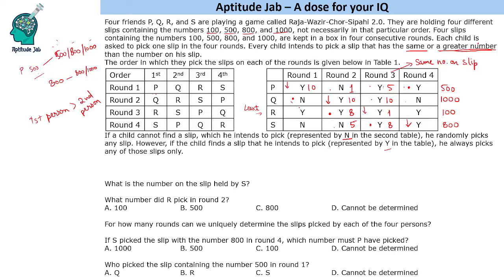Looking at rounds 1 and 4: in round 4, Q does not get their desired number and can pick anything — 500, 800, or 100. R can get anything of their choice since R is 100. S can pick anything less than 800, like 500 or 100. There are multiple possibilities for both rounds 1 and 4, so we cannot uniquely determine the slips picked in those rounds.